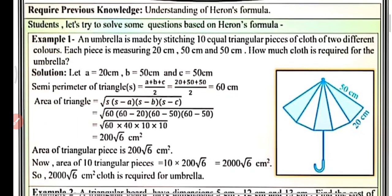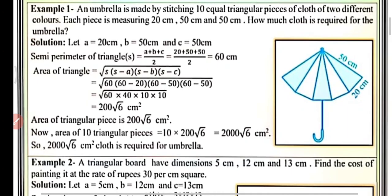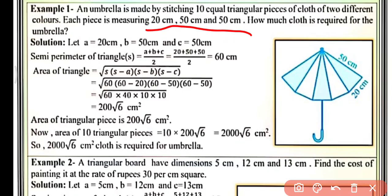Let's try to solve some questions based on Heron's Formula. In example one, an umbrella is made by stitching 10 equal triangular pieces of cloth of two different colors. Each piece is measuring 20 cm, 50 cm, and 50 cm. How much cloth is required for the umbrella? This umbrella is made by 10 equal triangular pieces, so each triangular piece dimension is 20, 50, and 50.